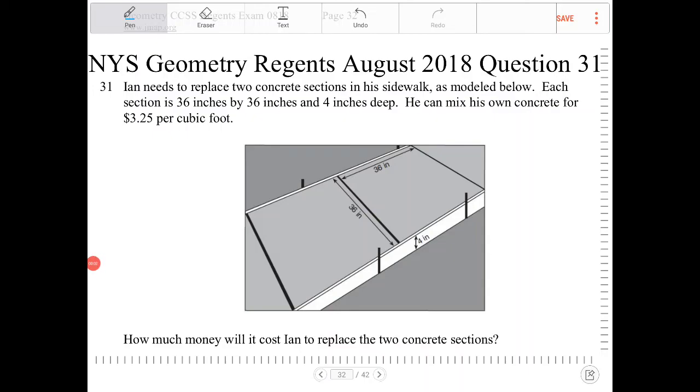Ian needs to replace two concrete sections in his sidewalk as modeled below. Each section is 36 inches by 36 inches and 4 inches deep. He can mix his own concrete for $3.25 per cubic foot. How much money will it cost Ian to replace the two concrete sections?